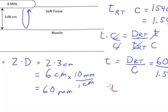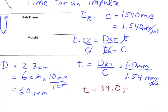So my final time is t equals 39.0, and the units come out to be microseconds. If I look at this problem, my millimeters cancel.